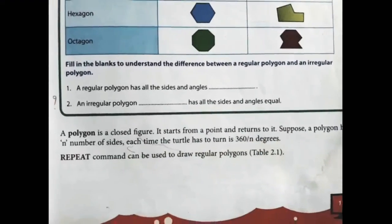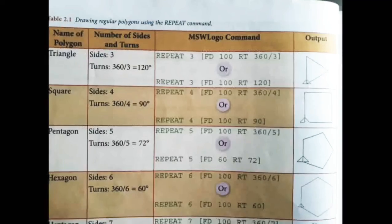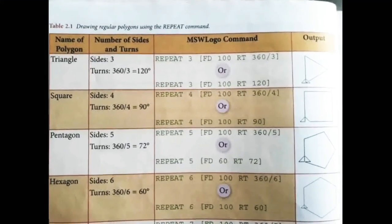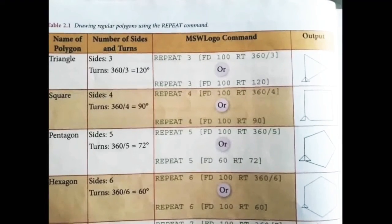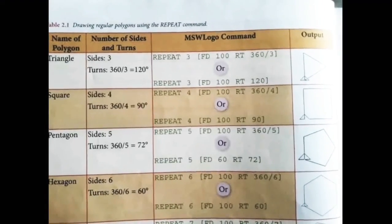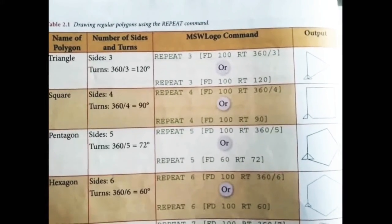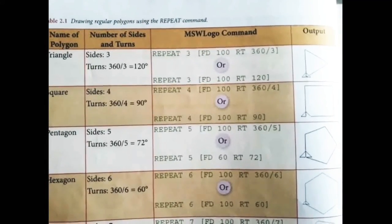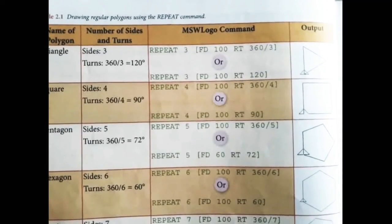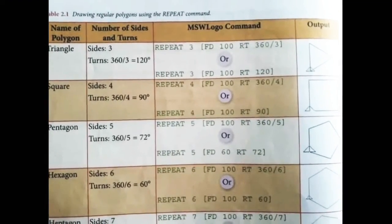The repeat command can be used to draw regular polygons only. For a triangle, the number of sides is 3, so the turn is 360 divided by 3, which equals 120 degrees. The command will be: repeat 3 fd 100 rt 360/3. For a square, the number of sides is 4, turns will be 360 divided by 4, and the command will be: repeat 4 fd 100 rt 360/4.